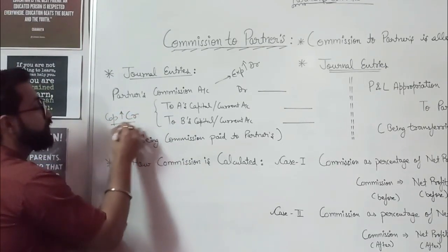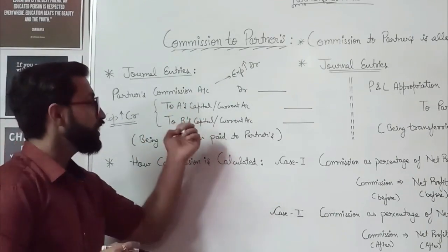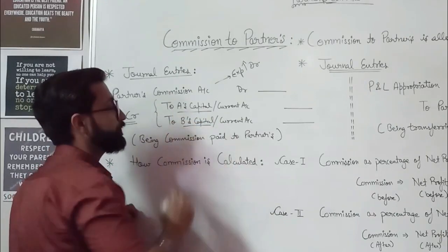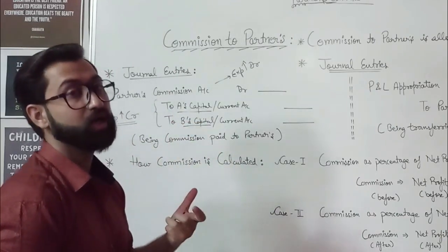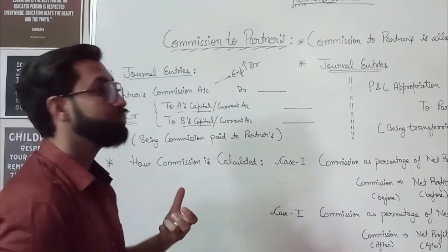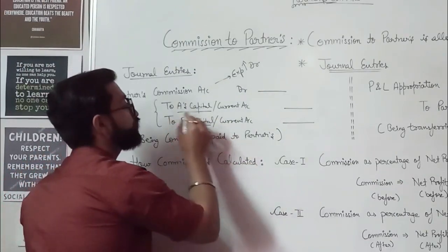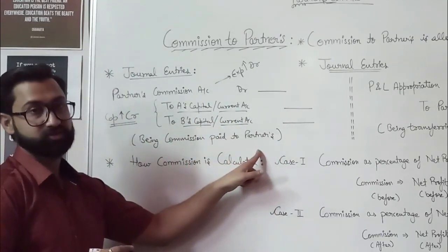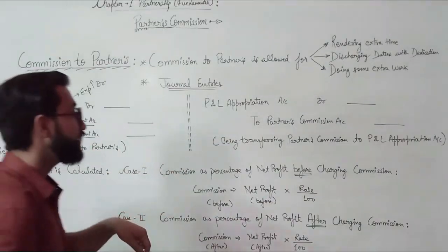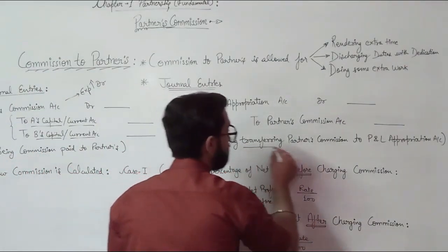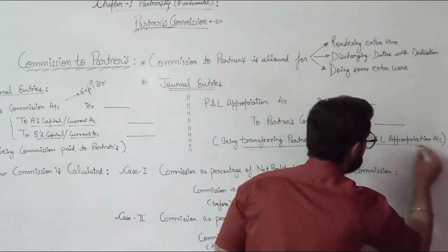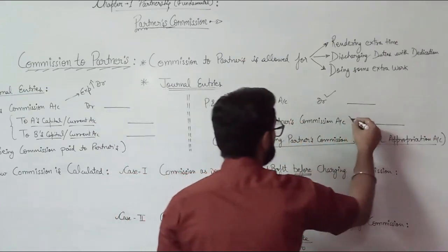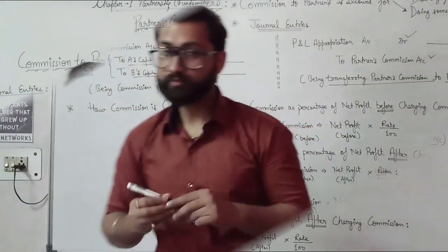Capital increase means it will be credited. Now if we are following the fluctuating capital method, then A's capital, B's capital. If we are following the current account method, or fixed capital method, then it goes to A's current account, B's current account — being commission paid to partners. At the end of the year, we transfer all partners-related items to P&L appropriation account: P&L appropriation account debit to partners' commission account.